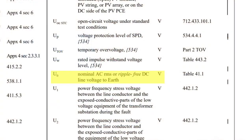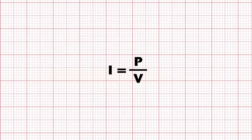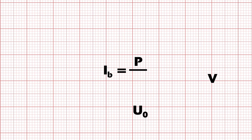U0 represents the nominal AC RMS line voltage to earth — in other words, the nominal voltage. So we'll change the I to IB (I with a lowercase b in the subscript), which now means the design current of the circuit. And we'll change the V to U0 (U with a zero in the subscript) to mean nominal voltage. In the UK it will have a value of 230 volts AC. So our formula is now: IB equals P over U0, or design current equals power over nominal voltage.